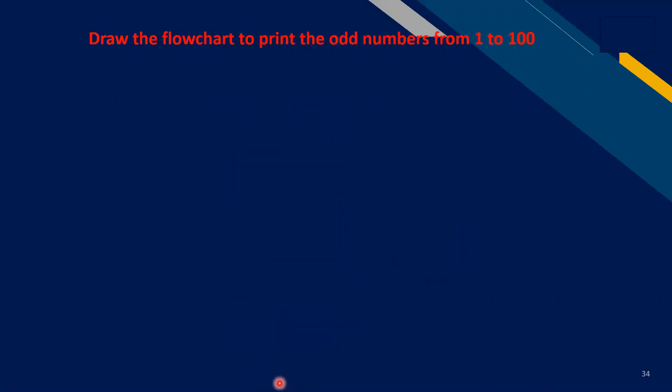The next one is draw the flowchart to print the odd numbers from 1 to 100. Let's print the odd numbers. It means that we increment k plus...